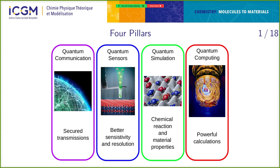Quantum technology is divided into four parts: quantum communication (quantum teleportation, quantum internet, secure transmission), quantum sensors (better sensitivity and resolution), quantum simulation (emulating chemical reactions, simulating material properties), and quantum computing (powerful calculation). In quantum chemistry or physics, simulation and computing are closely related — the difference is sometimes subtle.